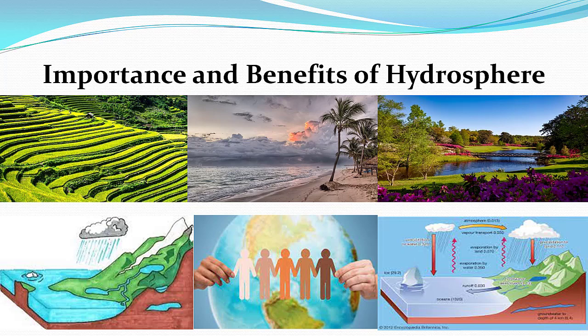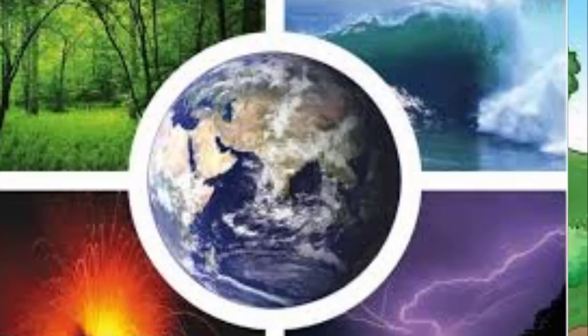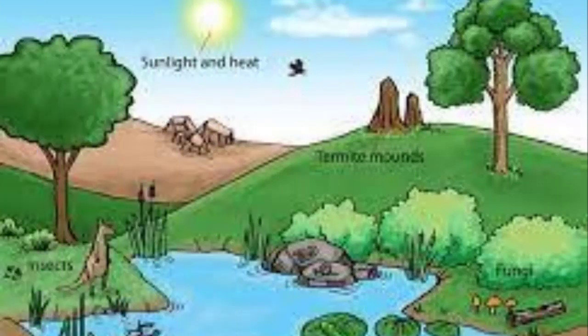Hydrosphere is the source of irrigation. Hydroelectricity is generated from hydrosphere. Hydrosphere is an important source of trade, particularly international trade — most international trade is carried through sea routes. River valleys and lakes attract tourists. Hydrosphere also keeps the climate moderate.